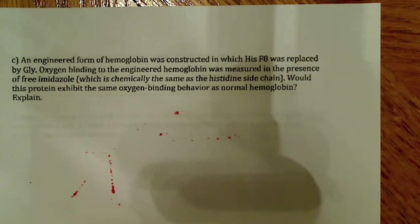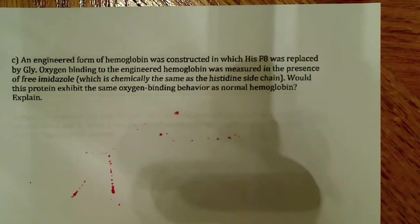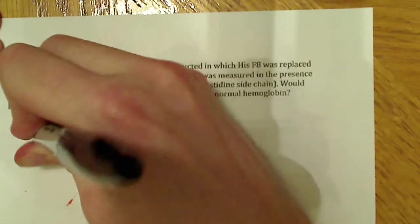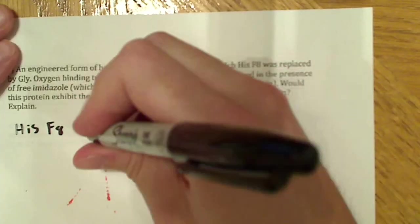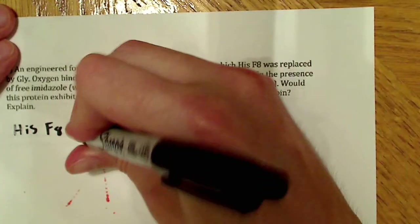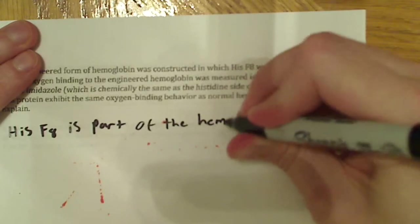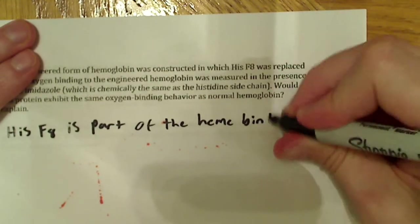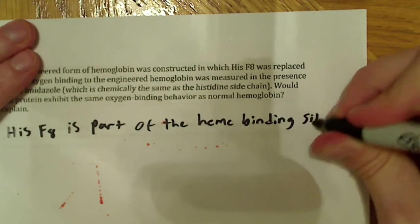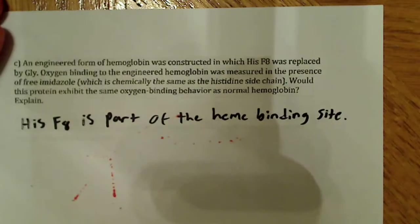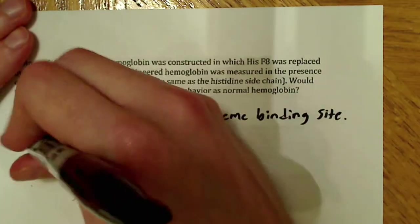Would this protein exhibit the same oxygen-binding behavior? The only real question is: what is histidine F8 and what is its role? Histidine F8 is part of the heme binding site, and this is where it becomes important to know a little bit about the structure of hemoglobin.